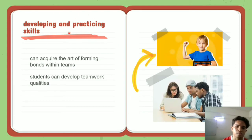Lastly, the developing and practicing skills. What are the examples of these skills? The example of these skills are trust, leadership, decision making, communication, and dispute resolution. For example, it is critical for students to have leadership chances throughout their education so that they can acquire the art of forming bonds with teams, identifying identities, and effectively completing tasks. In summary, students can develop team work qualities by online group study. That's all my part. Thank you.